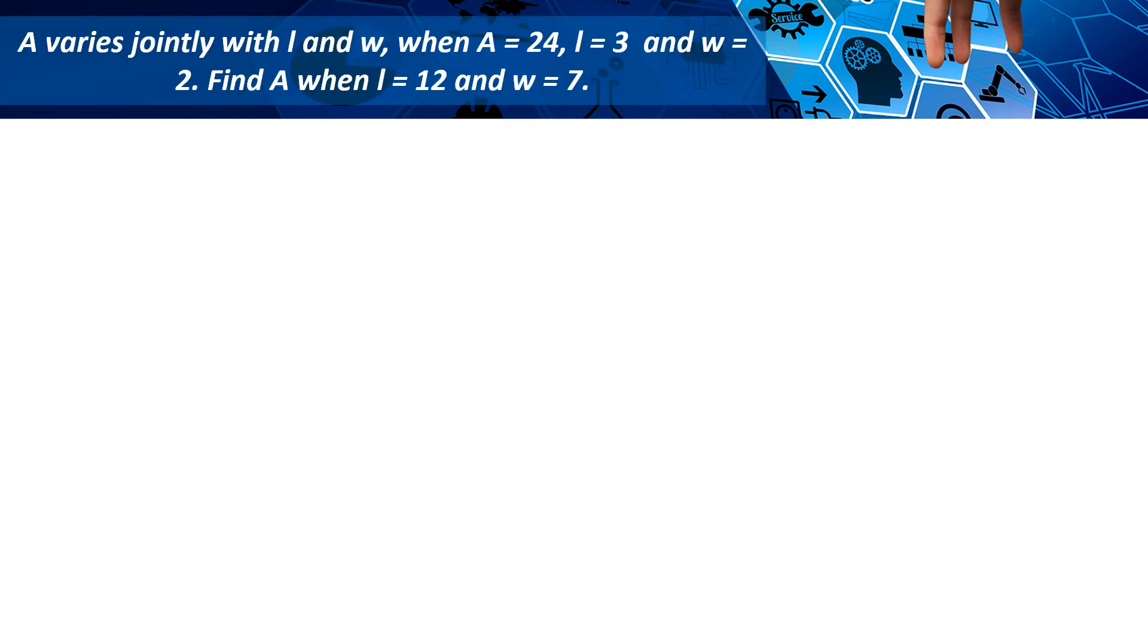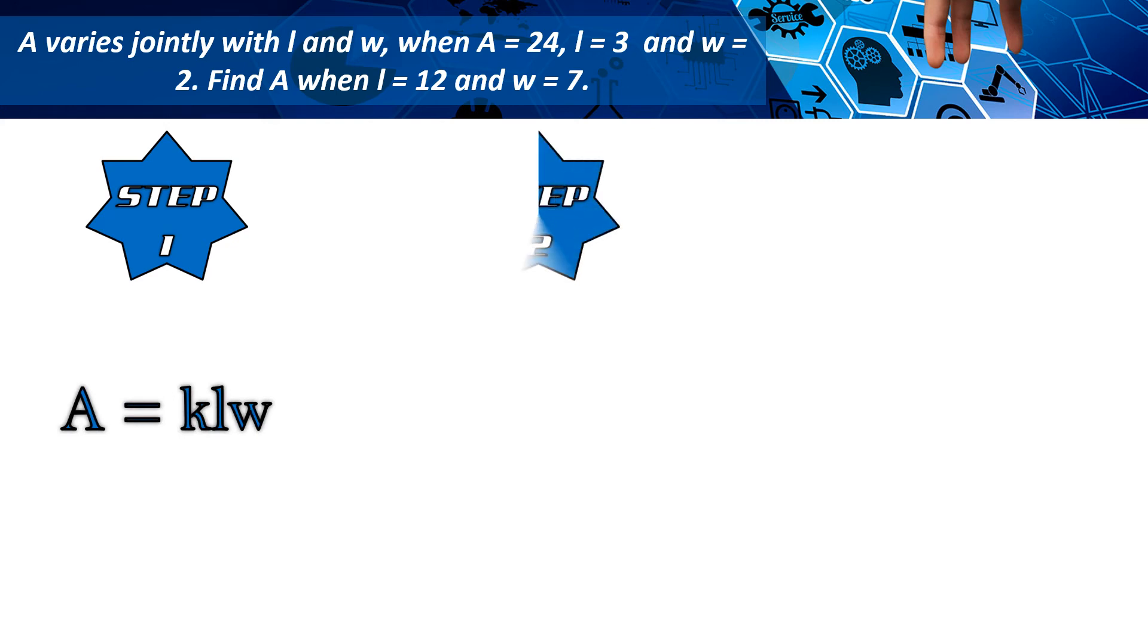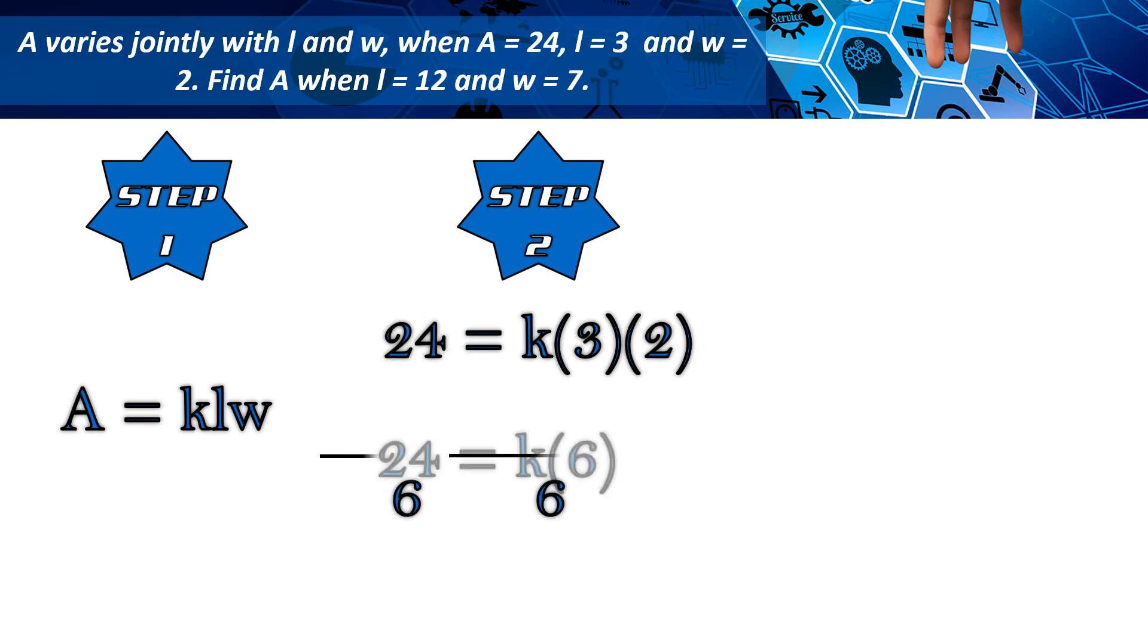Here are our three-step solutions. A equals KLW para sa step 1 dahil A varies jointly as L and W. Substitute natin ng 24, 3, at 2 bilang unang set ng values para mahanap ang k. k equals 4.